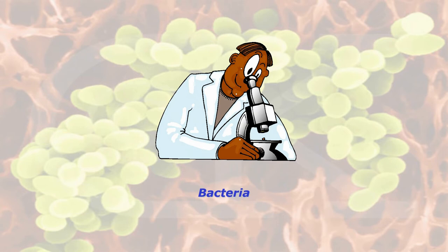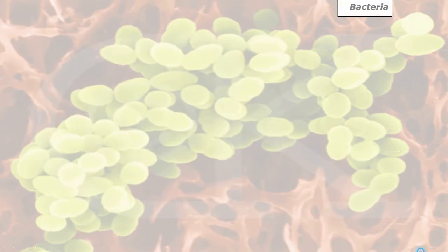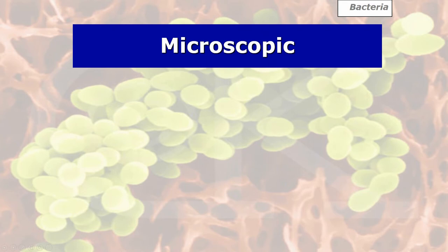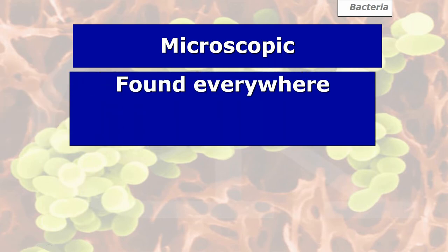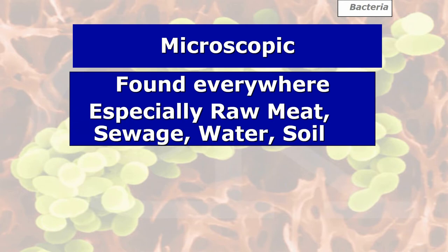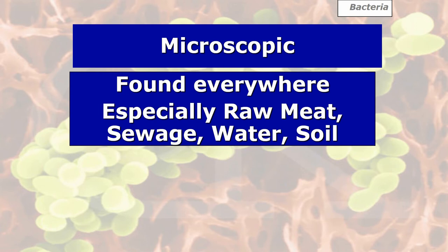So what are bacteria? They are living, single-celled organisms. Bacteria are microscopic — you can't see them with the human eye; you need a microscope. Their DNA is very similar to humans and other animals. They are found everywhere — they are ubiquitous — but there are four main places to remember: raw meat, sewage, water, and soil. The main depository for bacteria on the planet is soil.